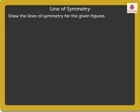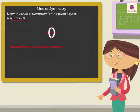Coming to the last figure, number 0. Here, we can divide the number 0 into two equal halves by folding it vertically or horizontally. Thus, we say that number 0 has two lines of symmetry. Kids, now it's time for you to practice Line of Symmetry on your own.